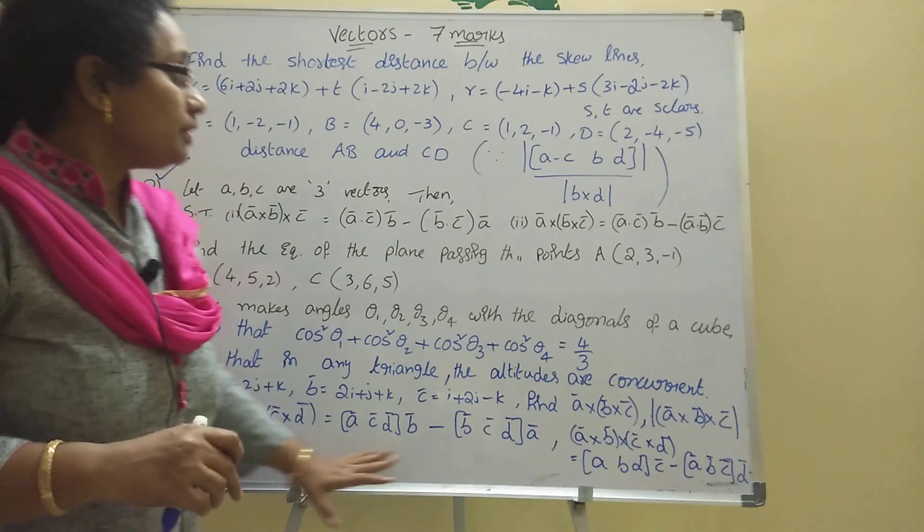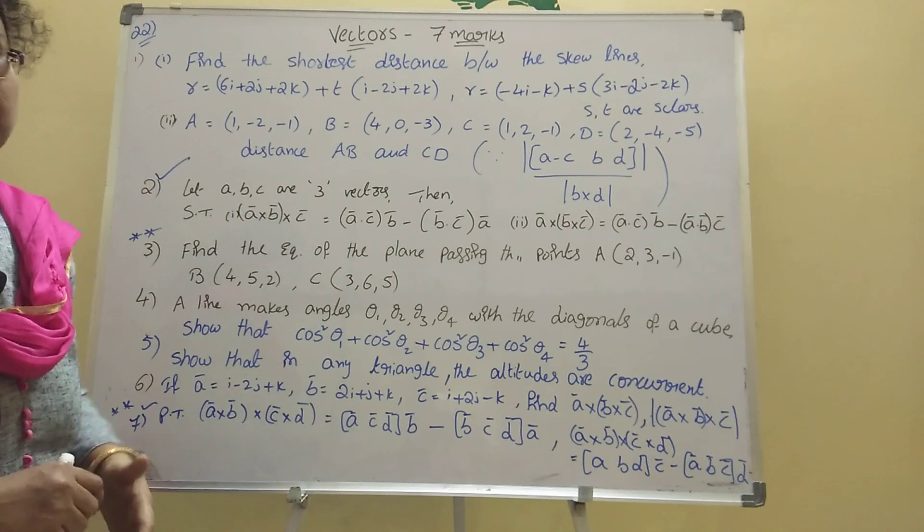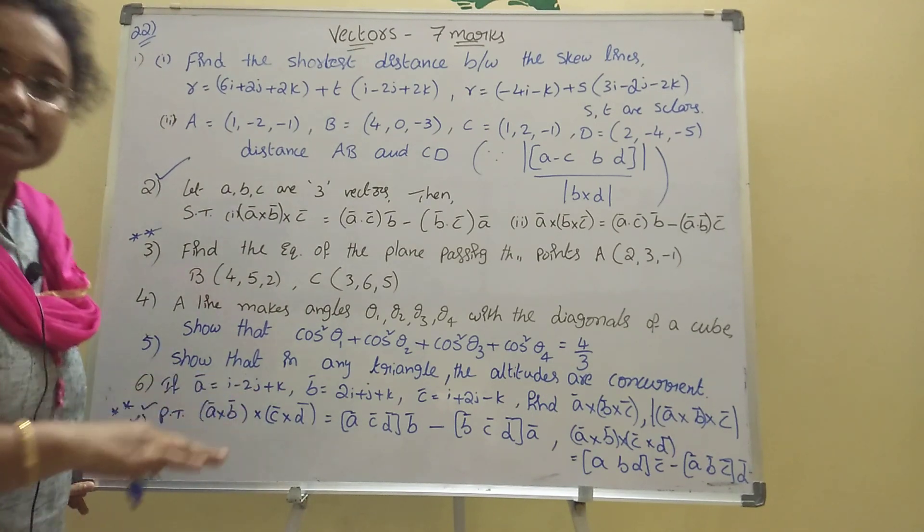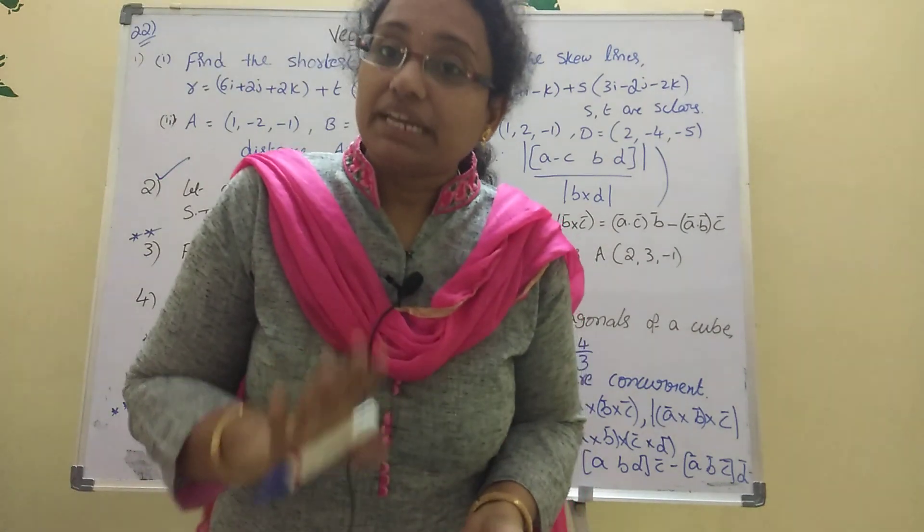One problem every 22nd bit, vectors 7 marks will come. Once take a screenshot, this is very important. And one more thing: here Telangana and AP people also listen.